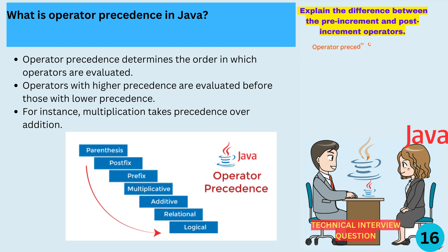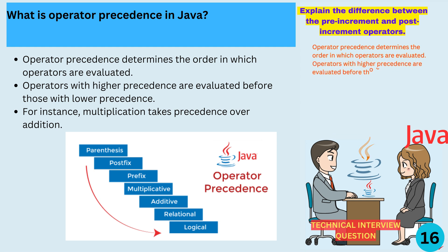What is operator precedence in Java? Operator precedence determines the order in which operators are evaluated. Operators with higher precedence are evaluated before those with lower precedence. For instance, multiplication takes precedence over addition.